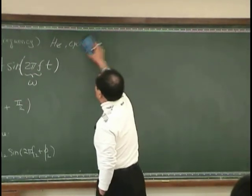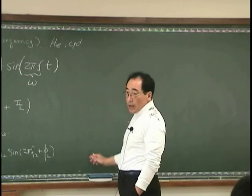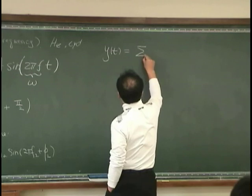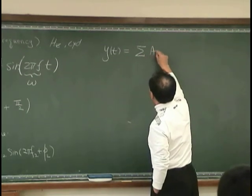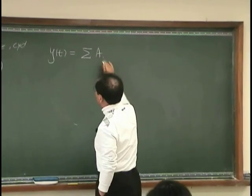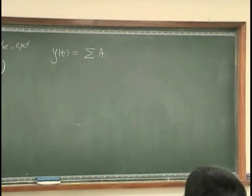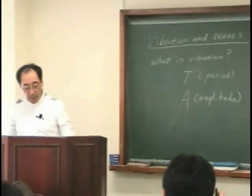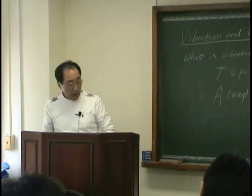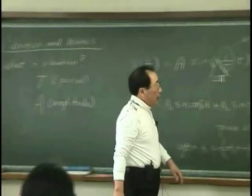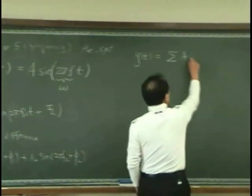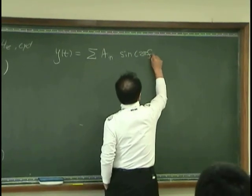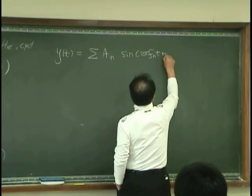So, what we can write, generally, the vibration as a superposition of a, did I use the notation of i or n in the text? n. Okay, a n, I can write the sine 2 pi f n t plus phi n.